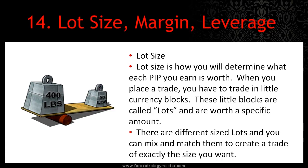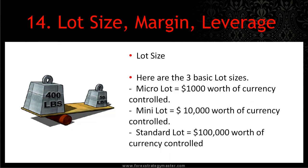Lot size is how you determine what each pip that you earn is worth. When you place a trade, you have to trade in these little currency blocks, and these blocks are called lots, and they're worth specific amounts. There are different sized lots that you can mix and match to create a trade of exactly the size you want. Here are the three basic lot sizes. You start with a micro lot, and this is worth $1,000 of currency – you can control $1,000 worth of currency with one micro lot. The second one is a mini lot, which controls $10,000 worth of currency.